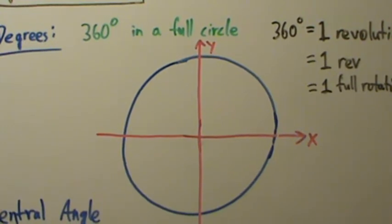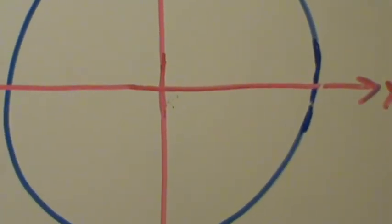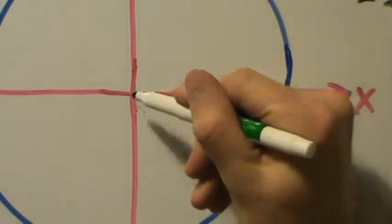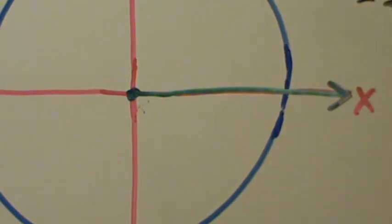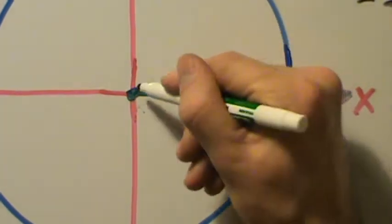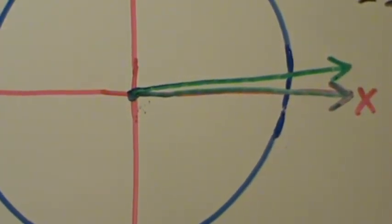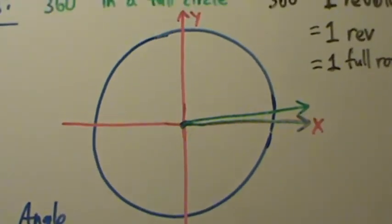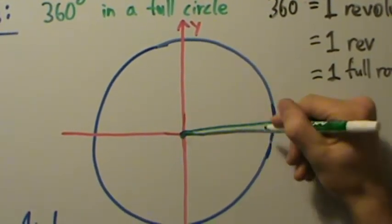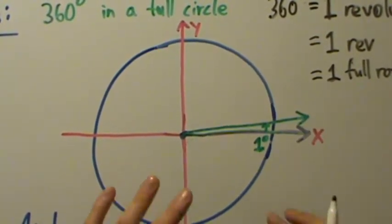If there are 360 degrees in a full circle, then one degree is going to be pretty tiny. Let's zoom in and draw one degree in standard position — vertex at the origin, initial side on the positive x-axis. One degree is really, really super tiny, even tinier than I can accurately draw. But even if it's not to scale, it illustrates the point that one degree is very small.